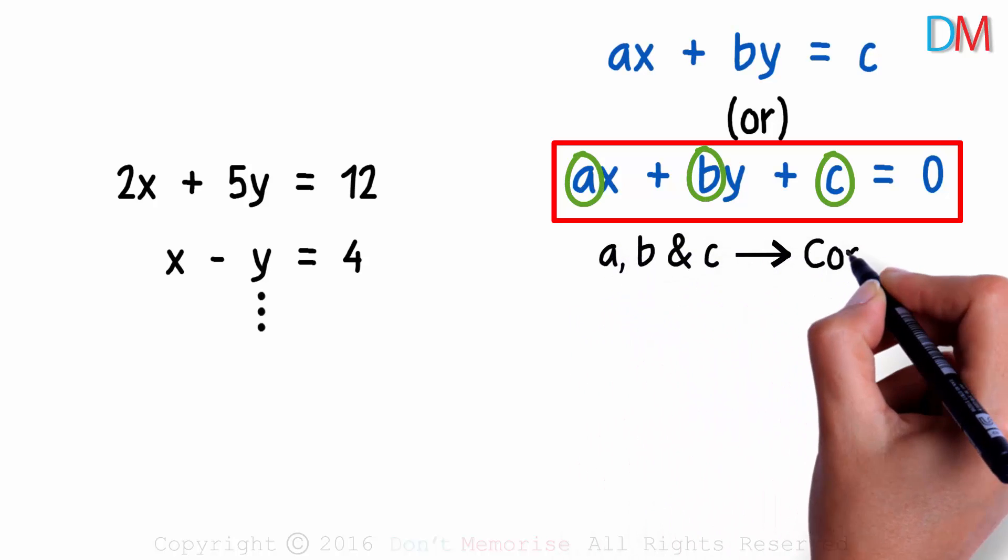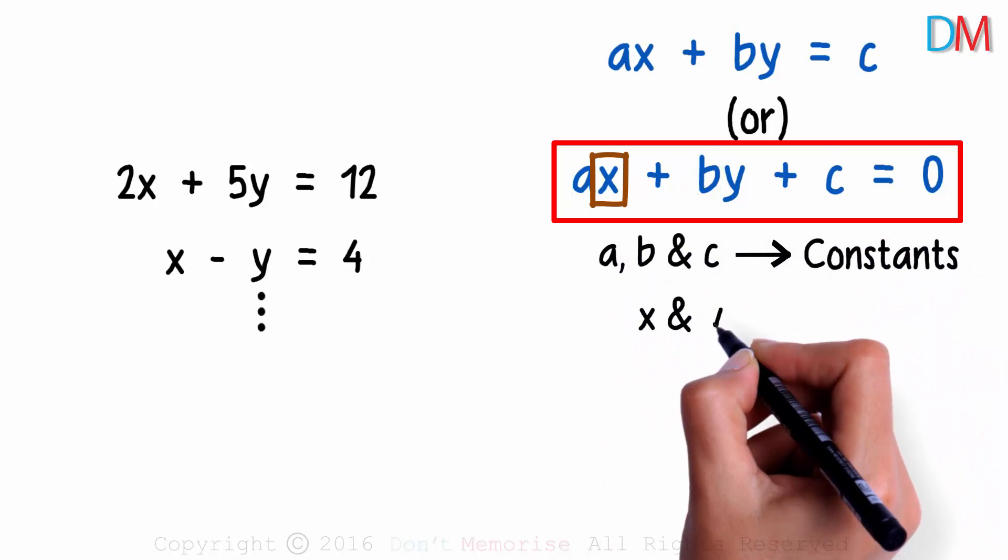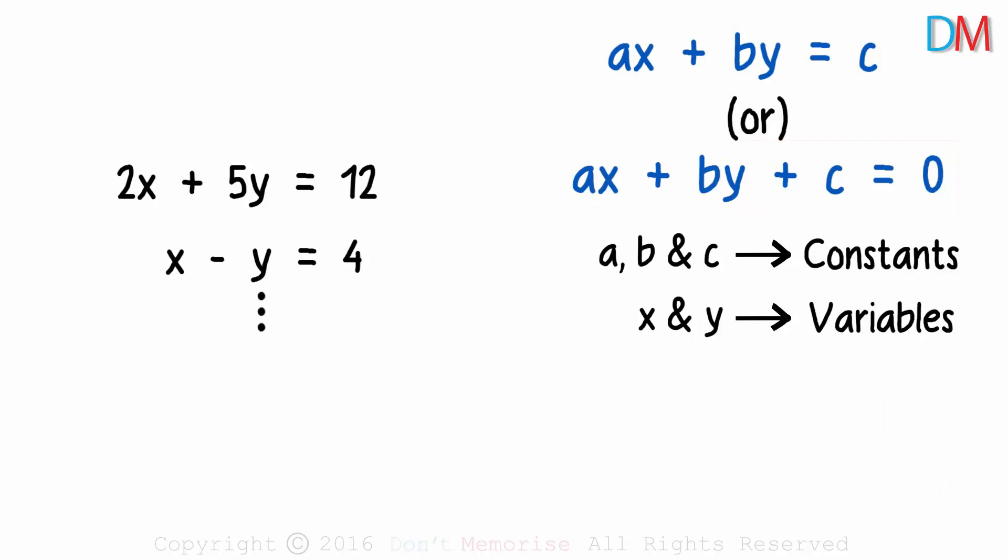a, b and c are constants, while x and y are variables. a is the coefficient of x and b is the coefficient of y. This is the general form we will consider.